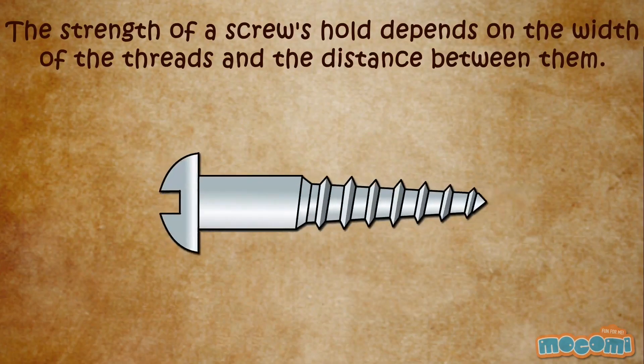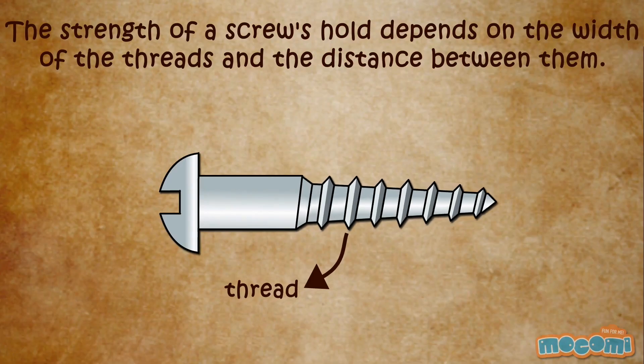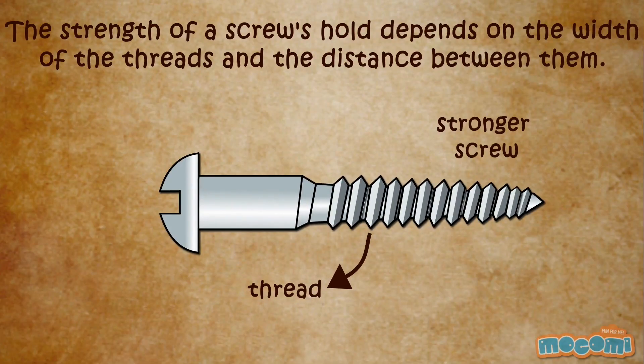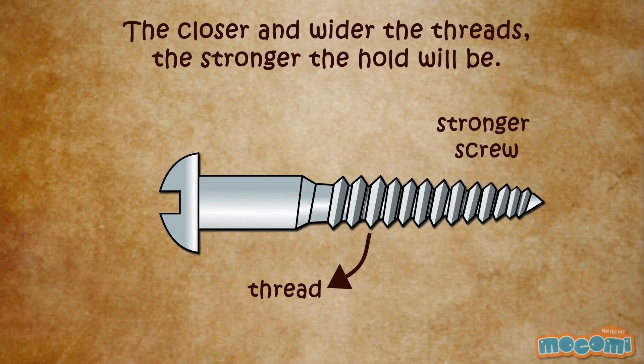The strength of a screw's hold depends on the width of the threads and the distance between them. The closer and wider the threads, the stronger the hold will be.